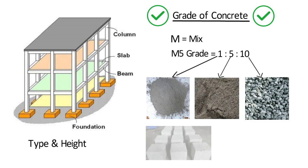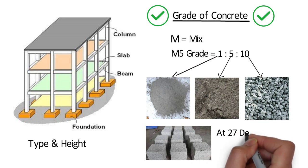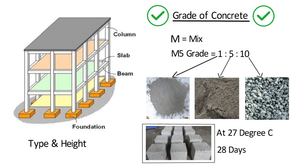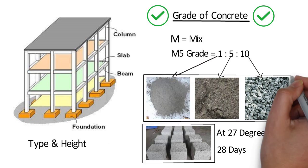At least three concrete cubes of 150×150×150 mm are cast for each mix at 27°C, and they are tested in a laboratory at 28 days. The mean strength is calculated at 28 days, and that is the strength of concrete for that particular mix.